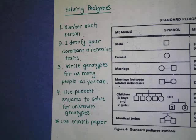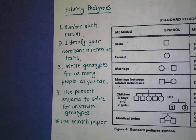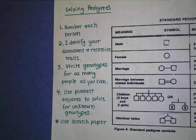These are the things that you should use to solve a pedigree chart. These are the steps you take every time you get a pedigree. The first step is that you need to number each person. Sometimes if you get a pedigree, let me show you a quick example.